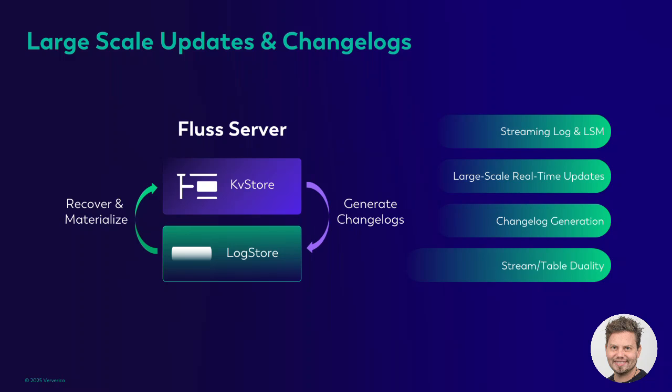Going back to stream-table duality, with Fluss we have both streams — the log — and tables within the same system. Similar to a database, the log or write-ahead log can be used to reconstruct the full state of the key-value store if required. By having tables instead of topics, we get real-time streaming with low latency like Kafka, support for real-time updates and lookup queries, and stream-table duality all within the same system.